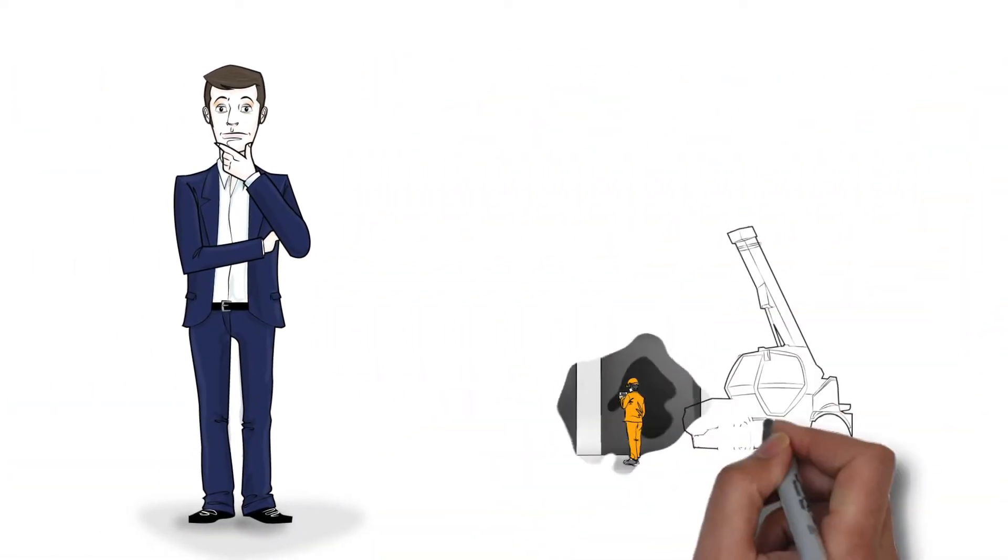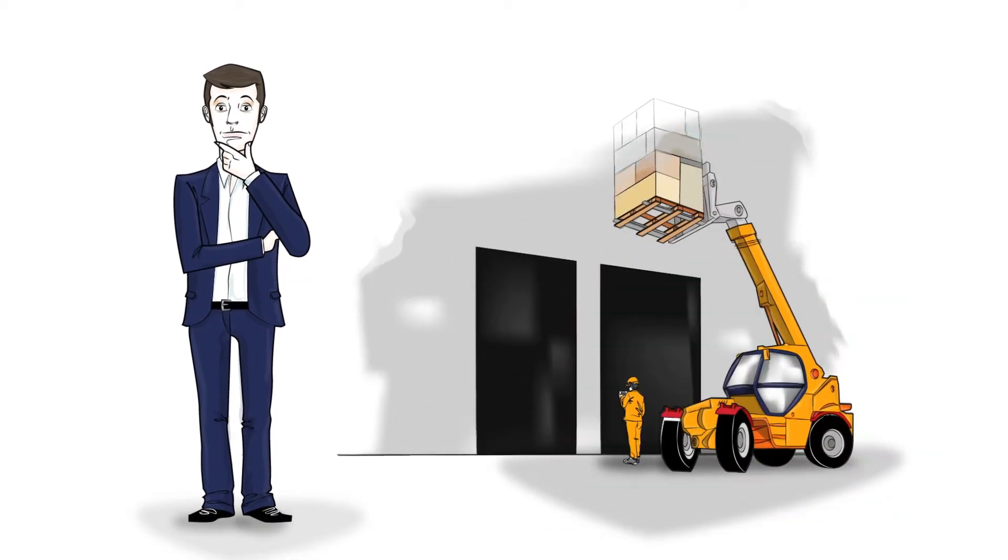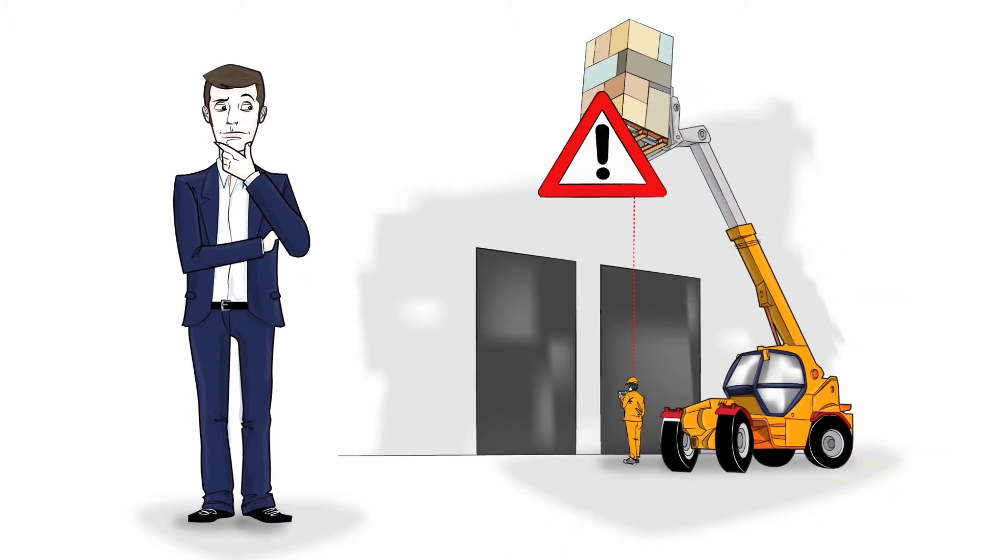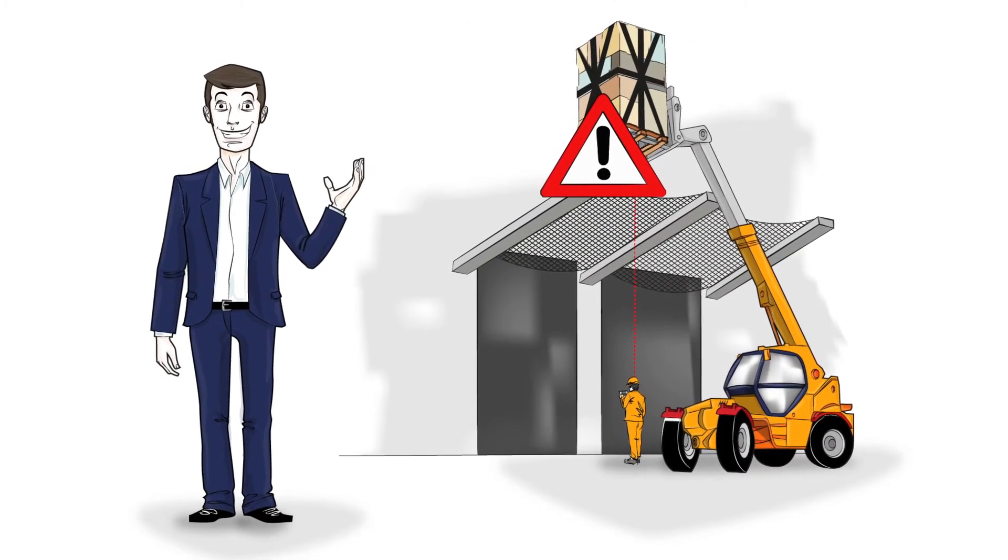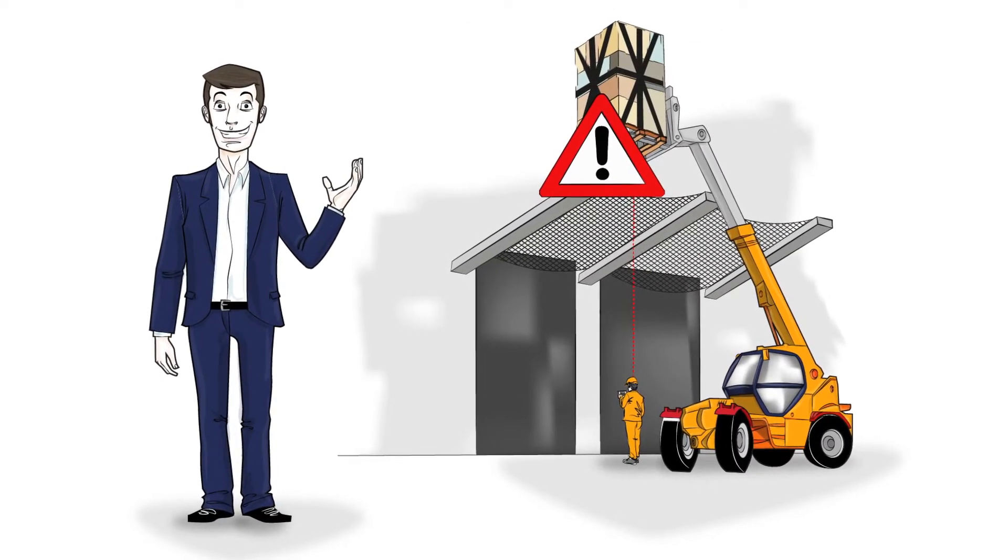Enterprise risk management seeks to anticipate events that might cause losses. The coordinator plays a key role in this process. Let's see how he explains what his work actually consists of.